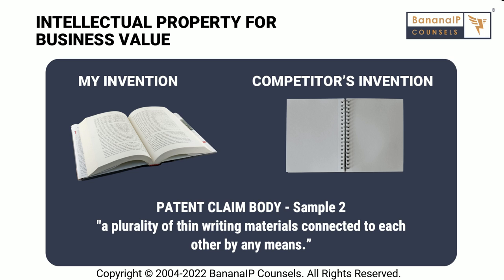Now let's look at another claim. Same invention, but the claim has been written differently. Is the spirally bound book infringing this particular patent claim? This claim is definitely infringed, because it doesn't even use the word 'papers' — it uses the term 'thin writing material.' And it doesn't indicate where these thin writing materials must be connected. Therefore, connection at any point would be covered within the scope of this claim, and the spirally bound book would be infringing. I gave you two versions of claims to illustrate that as an inventor, as a business, it is important not only to acquire IP, but also to acquire IP that is strong enough to stop competitors — not merely a patent that sits on paper, but one that actually works for you in reality.